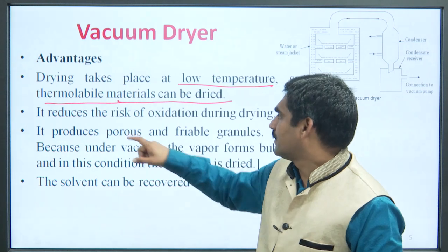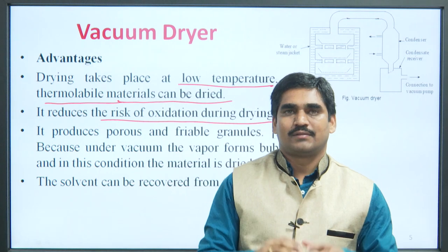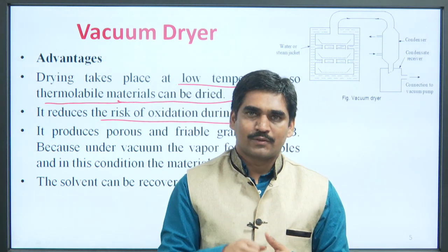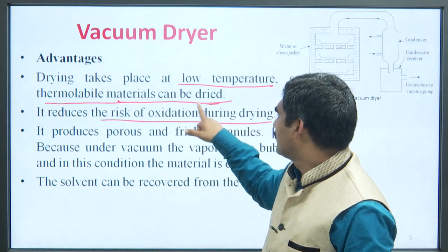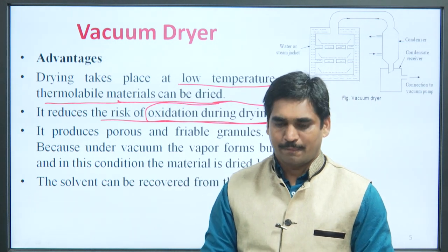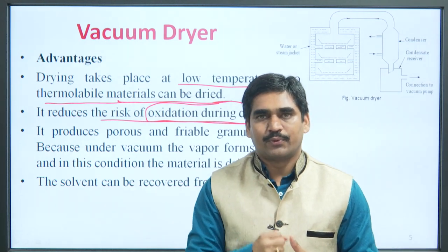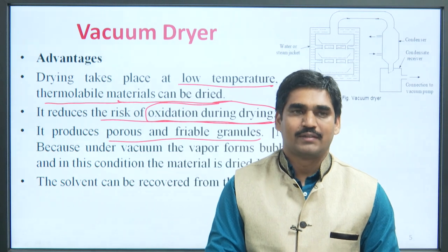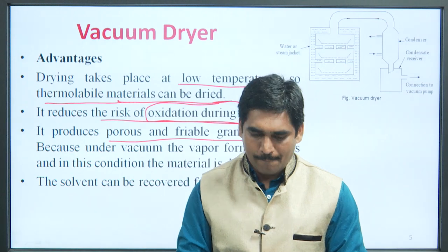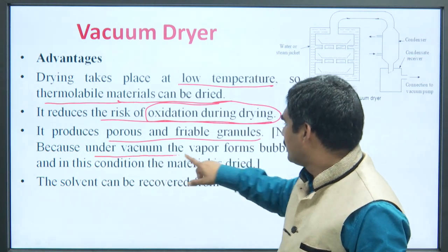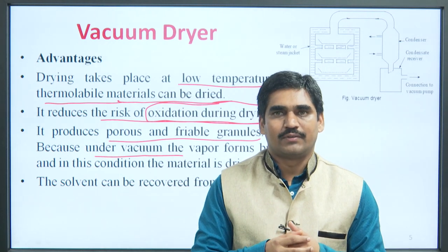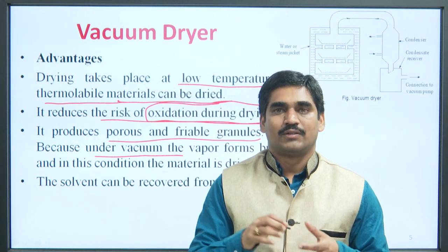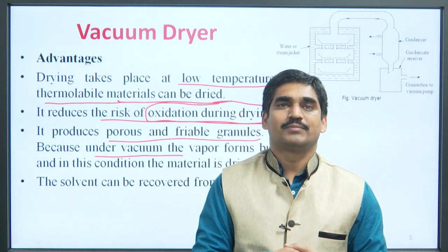Second advantage: it reduces the risk of oxidation during drying, since the whole process is carried out in a closed chamber under vacuum or under reduced pressure. So the risk of oxidation is reduced during the drying process. Next, it produces porous and fragile granules. The granules produced in this process are porous in nature and fragile — easily breakable. Under vacuum, when the liquid evaporates it forms bubbles, and in this condition the material is dried, making it porous in nature.